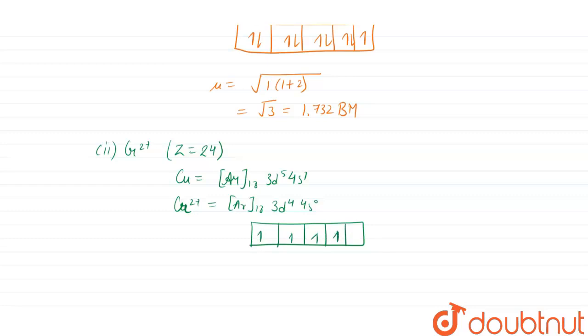μ equals square root of 4 into 4 plus 2. 4 plus 2 is 6, so 4 into 6 equals 24. Root of 24 comes out to be 4.89 BM.